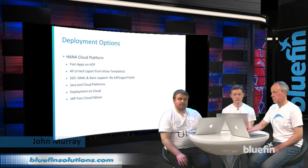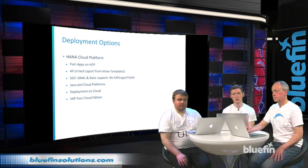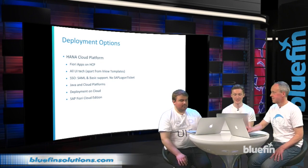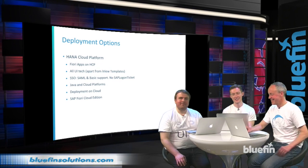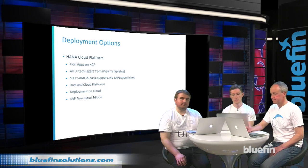Finally, we've got the HANA Cloud Platform, which is all shiny, new, and modern. This one supports all the applications and all the UI technology as well, but it doesn't support iView — much like the ABAP front-end server — and it also doesn't support all the SSO options; it does all of them apart from SAP logon tickets. It's deployed on Java rather than ABAP and can be deployed on the cloud only — there are no on-premise options. One new option for cloud deployment is the SAP Fiori Cloud Edition, which comes with a limited number of the most commonly used SAP Fiori apps and use cases, the ability to make and customize your own apps, and theming and branding support — a great way to put your feet in the waters of Fiori.